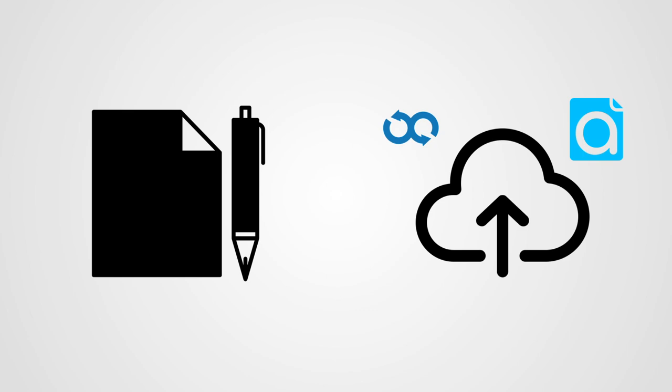Annotation can be done the old-fashioned way, right on the paper you're reading, or you could upload your material and use an online program like Diigo, Annotate, Markup, or even a Google Doc. For this demonstration, I'm going to use the old pen and paper method. The process is the same — the only difference is the tool you choose.